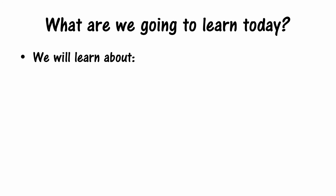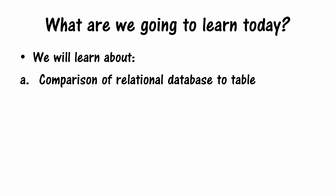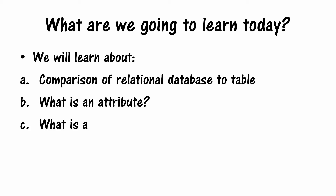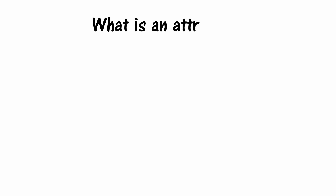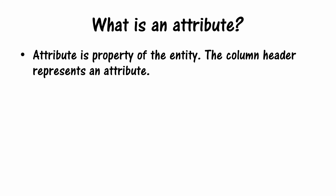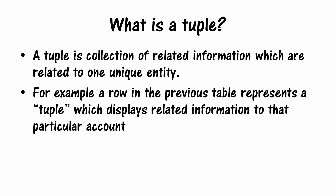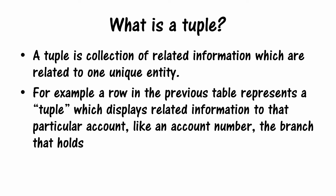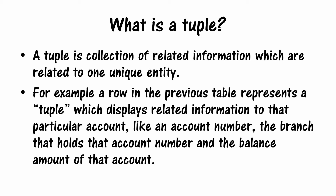In today's tutorial we will cover: the comparison between a relational database and a table, what is an attribute, what is a tuple, and what is a domain. An attribute is a property of the entity — just like the column headers represent attributes, such as account number, branch, and balance amount.